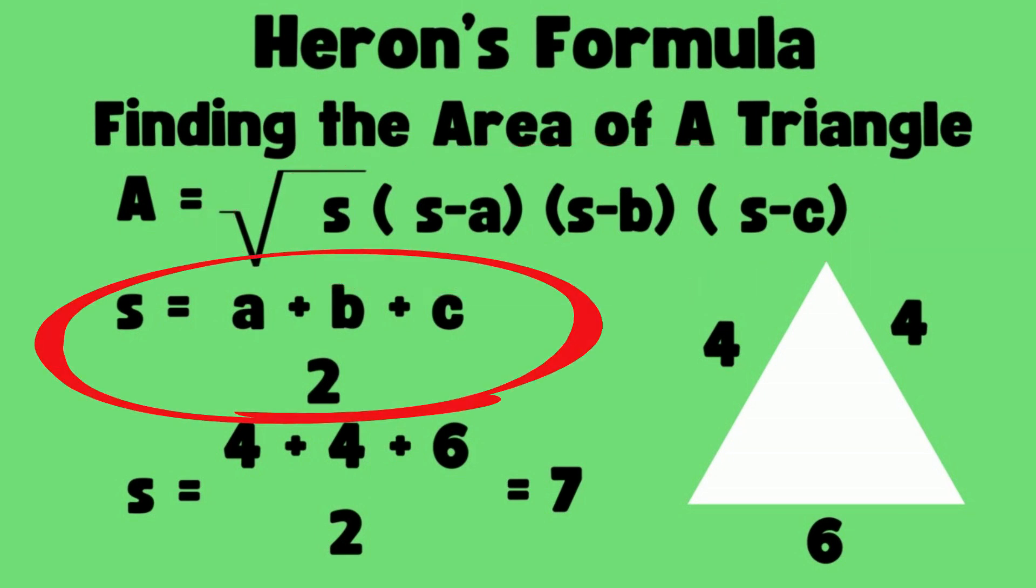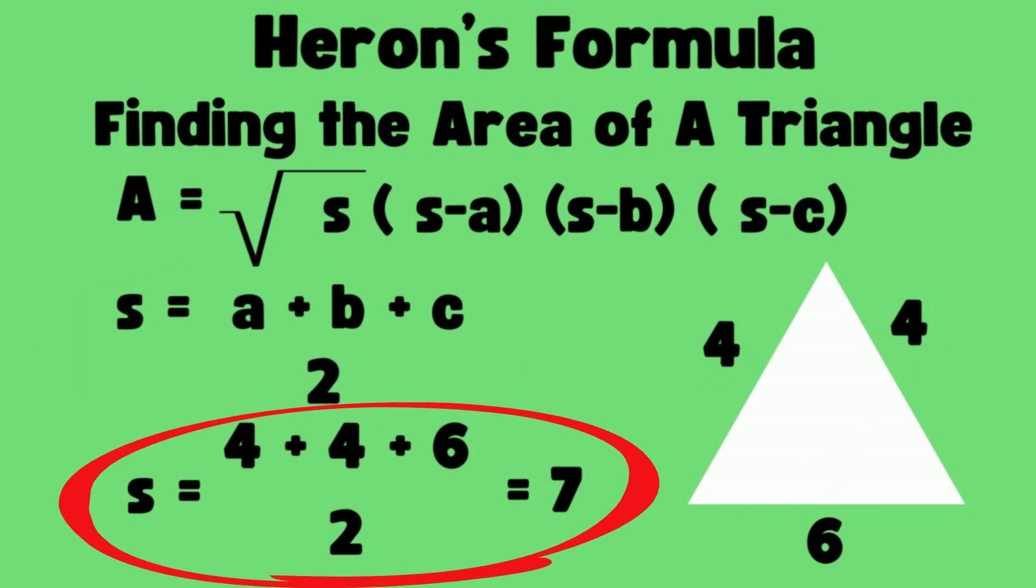To find s, you add the three sides a, b, and c and divide by 2. So I'm going to take 4 plus 4 plus 6 and divide by 2. That gives me 14 over 2, which is 7. That's the value of s.